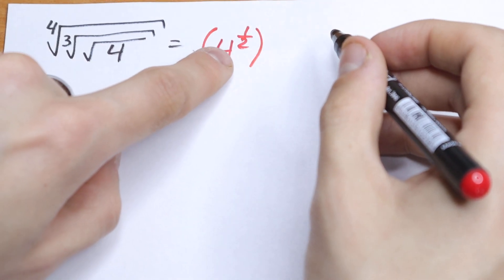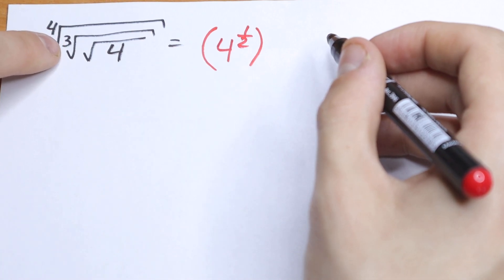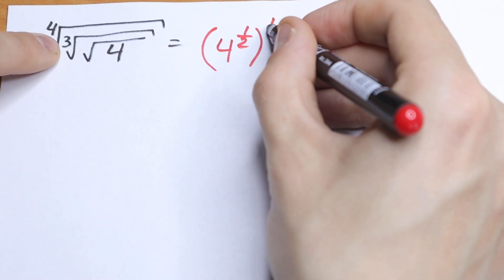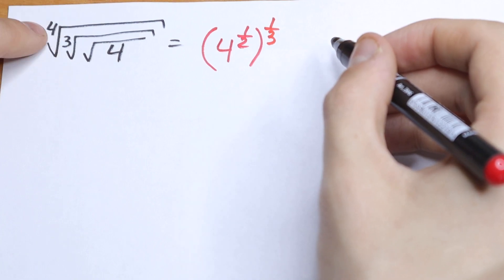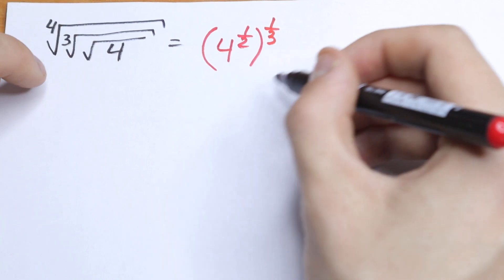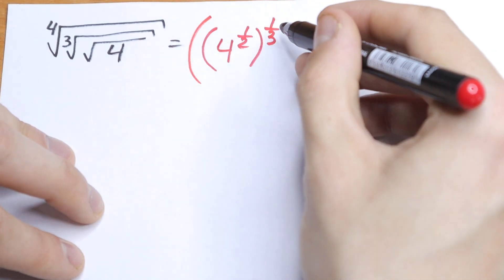We raise this power one half to the power one third, because we have cube root to the power one third. And take a look, we have one more root, so we need to raise all of these to the power one fourth.